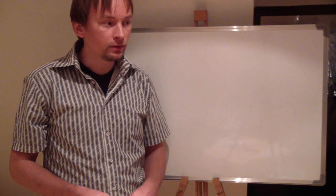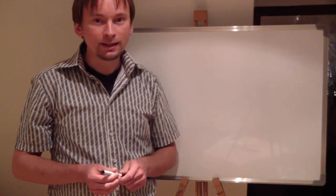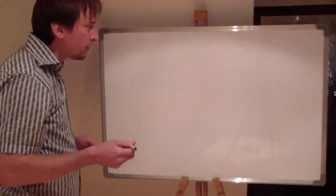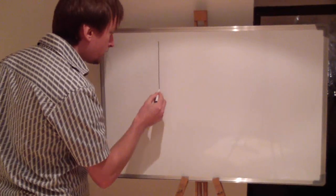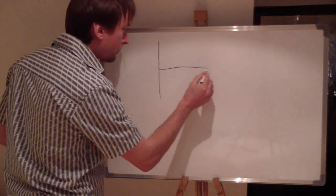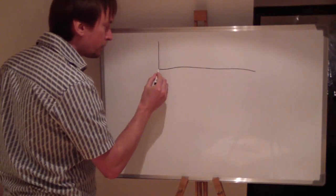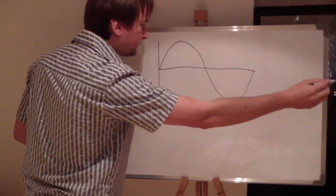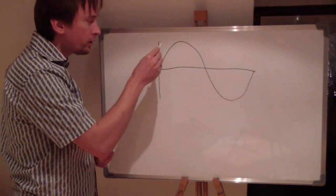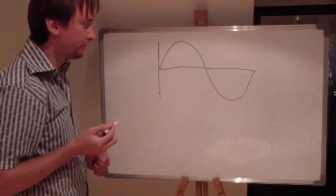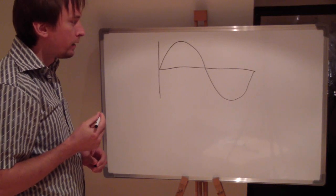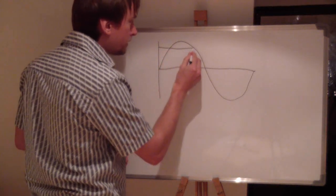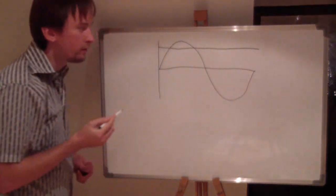So what is an alternating current? You know the generator produces alternating current AC, not DC, not direct current. What is AC? So when this is the voltage and this is the time, then alternating current is something like this and so on. So the voltage changes its value over time. Now what is a direct current? A direct current is such a current. It does not change over time. It stays constant.